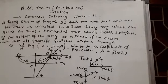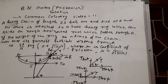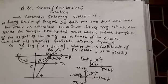A heavy chain of length 2L has been tied at A and the other end is attached to a small heavy ring. This ring slides on a rough horizontal road which passes through A. If the weight of the ring is n times the weight of the chain, show that the greatest possible distance from A is (2L/λ) log(λ + √(1 + λ²)), where μ is the coefficient of friction and μ = 1/(λ(2n+1)).